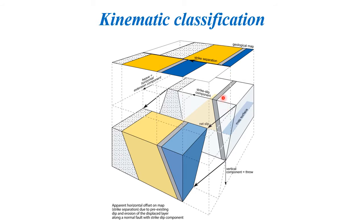Plunge angle is measured in the vertical plane that contains the slip line, between the horizontal and the net slip line. The offset shown by a planar feature in a vertical cross-section perpendicular to the fault is called dip separation. The vertical component of dip separation is called throw, and the horizontal component is called heave. Note that dip separation is not equivalent to dip slip — the former depends on the orientation of the offset surface as well as the nature of fault displacement.